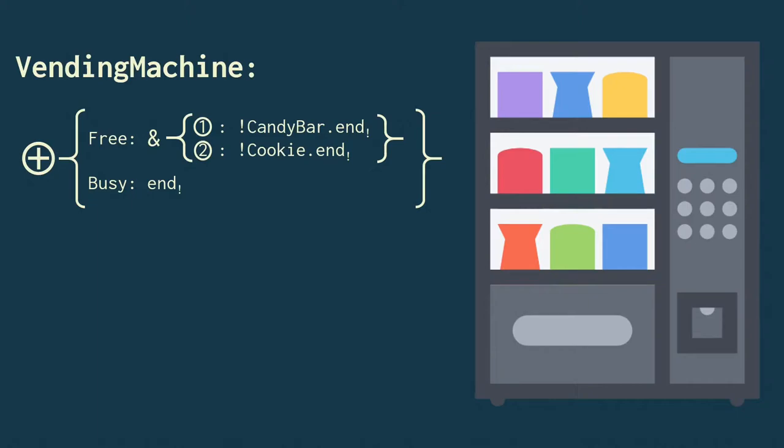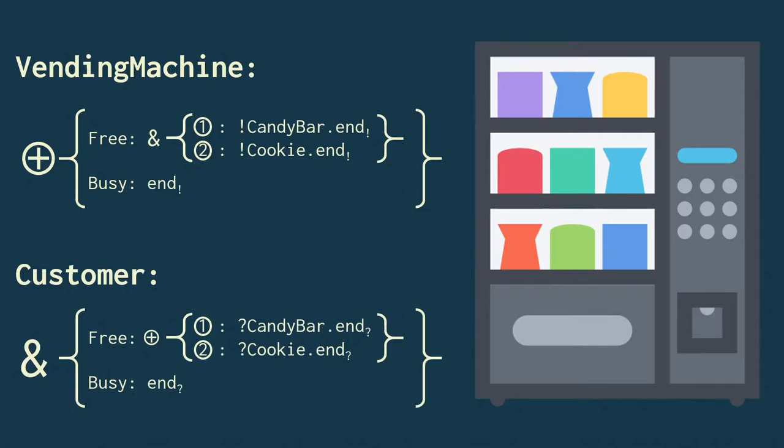We can also write a session type for the customer. Now, you'll notice here that where the vending machine sends, the customer receives, and where the vending machine makes a choice, then the customer offers a selection. So this duality means that the communication between the two parties is safe and that no deadlocks arise within a single session.